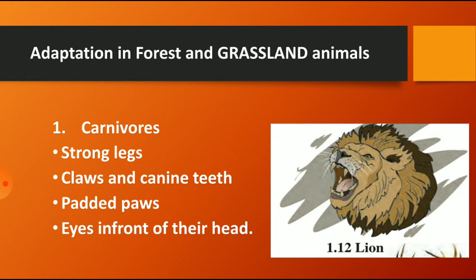What adaptations do they have to adjust to their surroundings? Carnivorous animals have strong legs, claws, and stronger canine teeth, padded paws, and eyes in front of their head to obtain food. These are the adaptations in carnivorous animals.